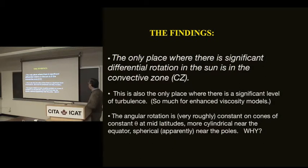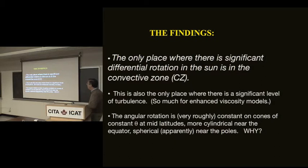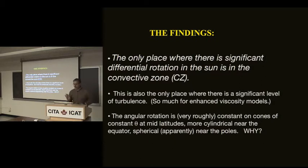I mentioned this for many years: one of the models people like to use in decretion disks was one in which the so-called enhanced viscosity was due to convective processes. Well, that's kind of an embarrassment for those models, because if you do that, you better put it in with a minus sign, because it creates differential rotation rather than damps it. Interesting result. The angular rotation is, roughly speaking, constant on cones of constant theta — more cylindrical near the equator, more spherical apparently near the poles. There's some discussion as to how good the data are near the poles.